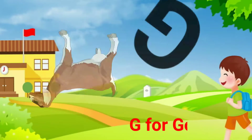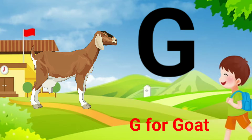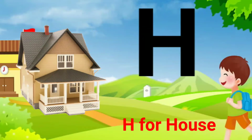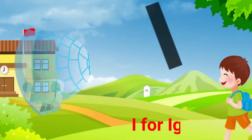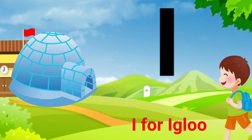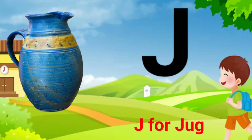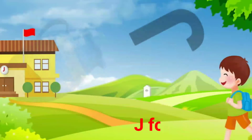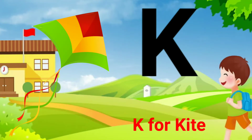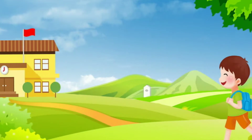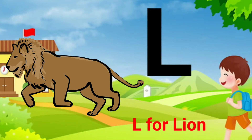G for goat, H for house, I for igloo, J for jag, K for kite, L for lion.